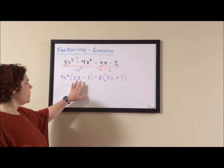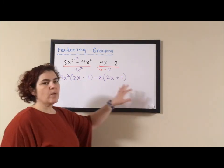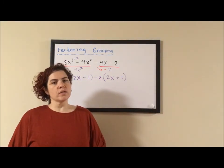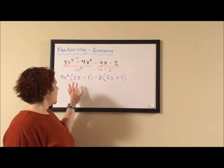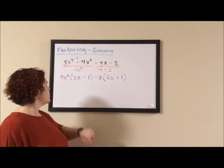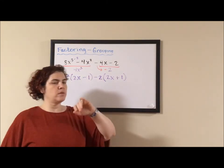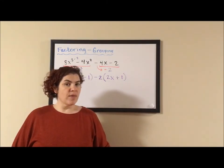If I look at the parentheses 2x minus 1, 2x plus 1, I see a lot of students trying to laundry list these parentheses so that the answer becomes 2x minus 1, 2x plus 1, and 4x squared minus 2. You can't do that.